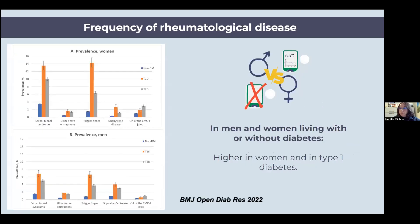When we look at what happens in women and men, we can see some differences. In women with type 1 diabetes in particular, we more frequently observe carpal tunnel syndrome and trigger finger. In men, these are also frequent, but less so than in women. It is also very frequent in type 2 diabetes.